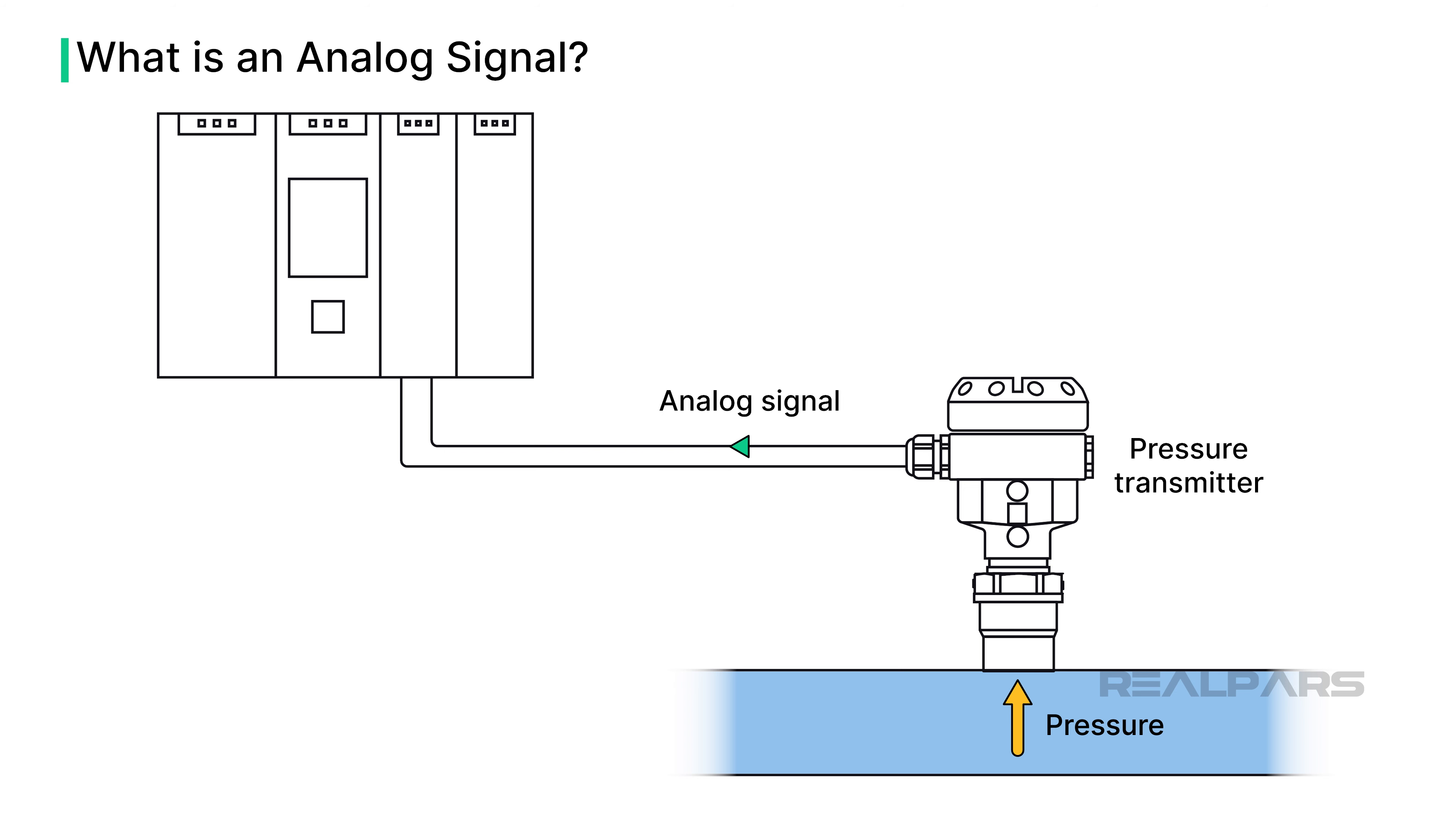How many possible conditions are there in an analog signal? Well, a lot more than two. In fact, there are an infinite number of possible conditions. Transmitters produce voltage or current analog signals representing process variables such as pressure and temperature.